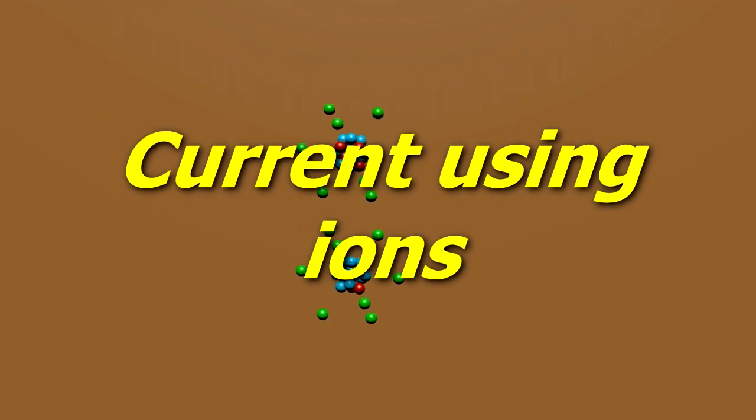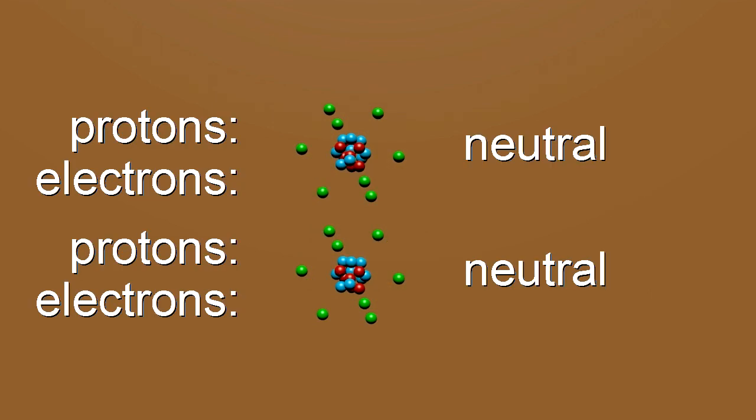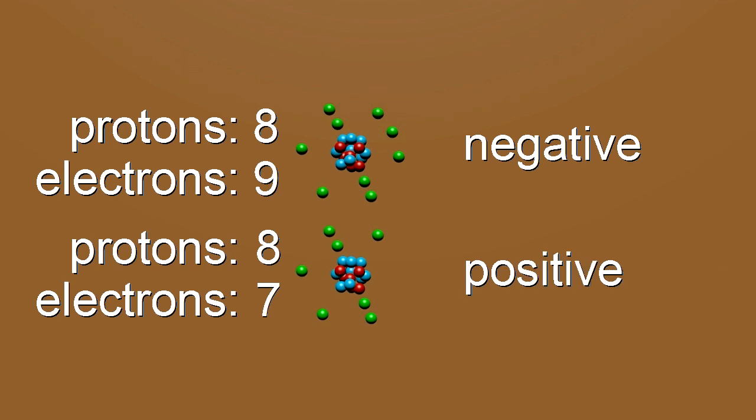There are other ways to produce current too, such as by moving ions around. A neutral atom is one that has an equal number of positive protons and negative electrons. But if you add an extra electron, then the atom has more negative charge than positive charge. It's negatively charged. Or if you remove an electron, then it has more positive charge than negative charge. It's positively charged. We call those charged atoms ions.